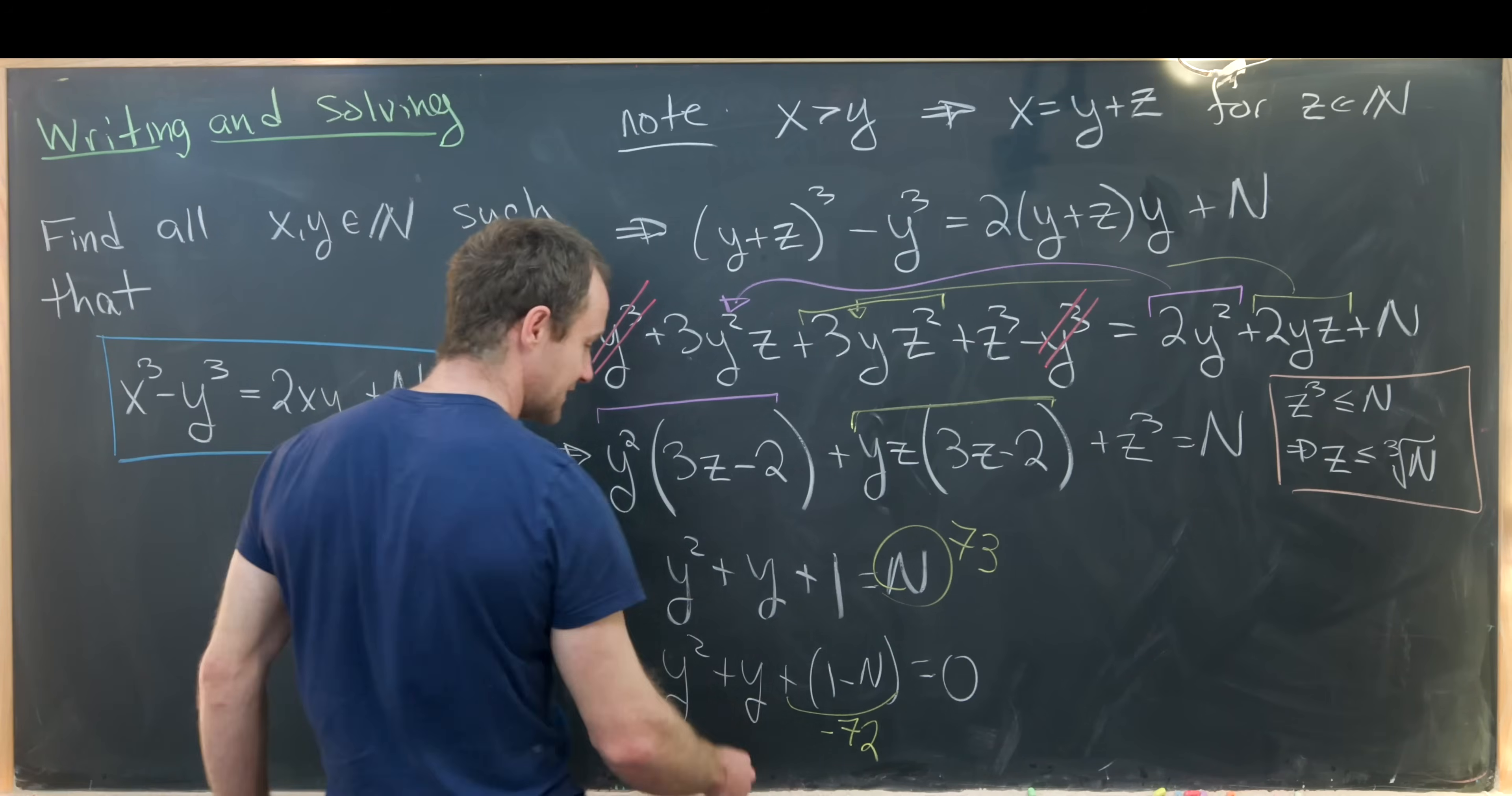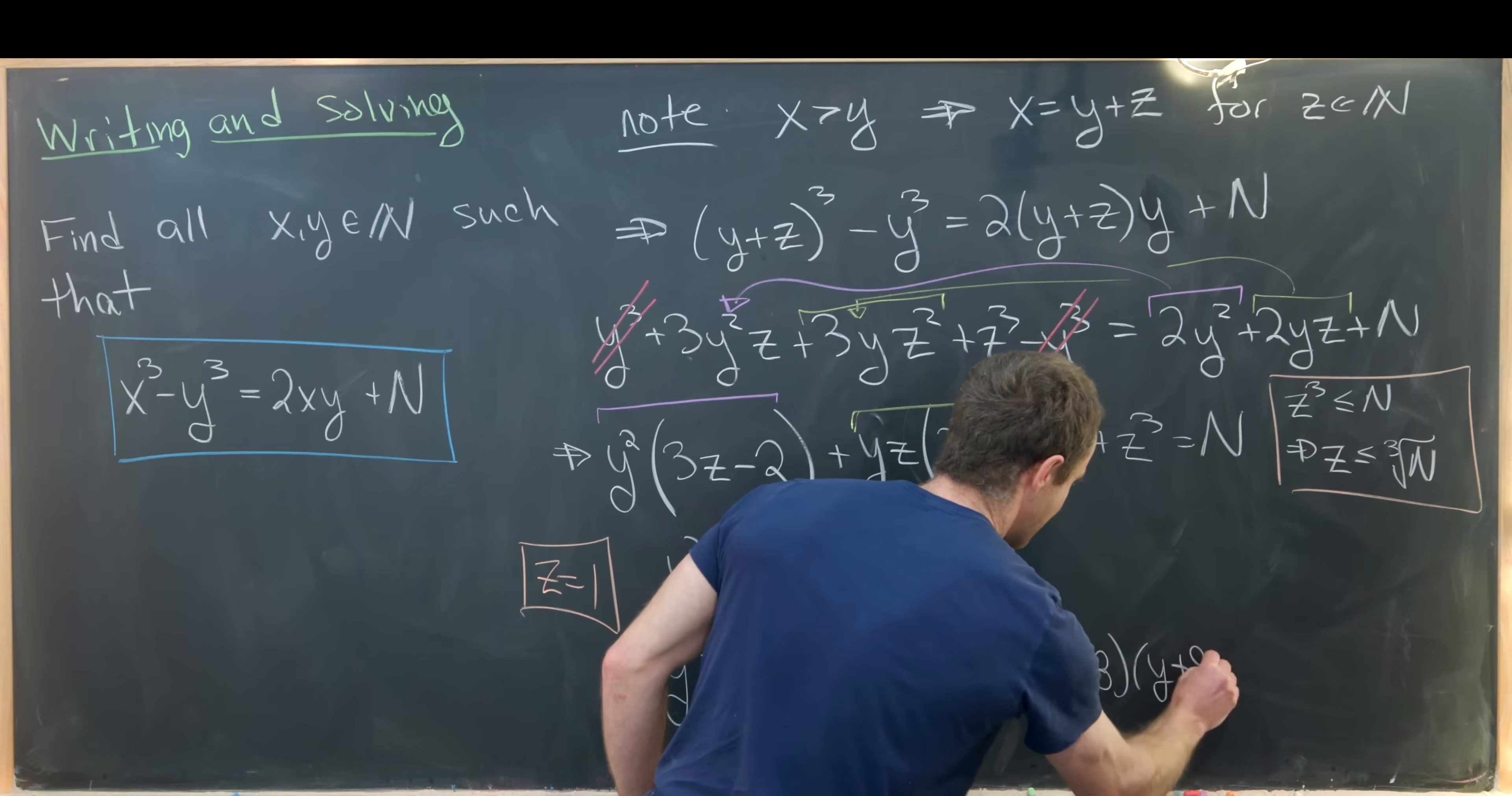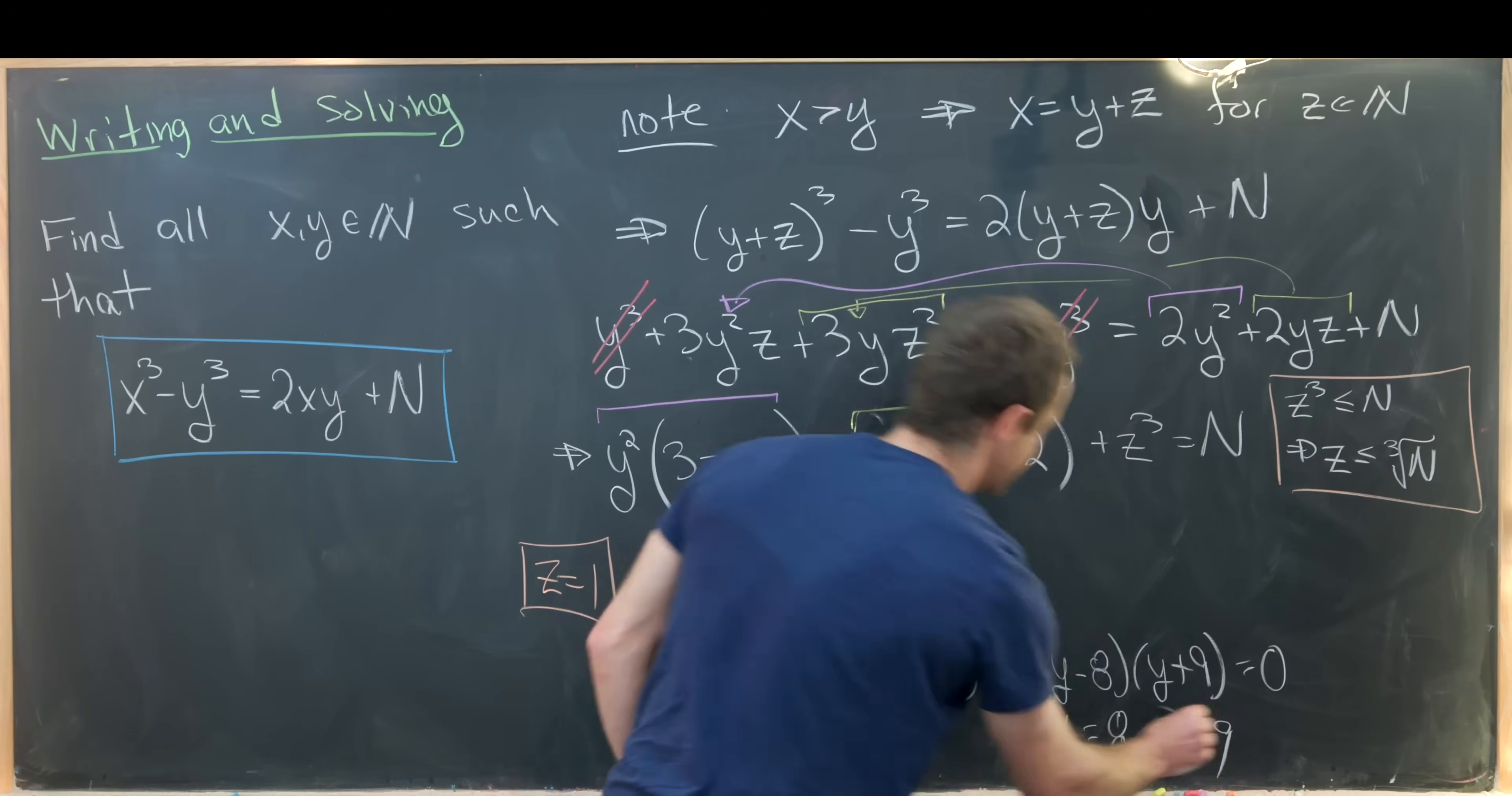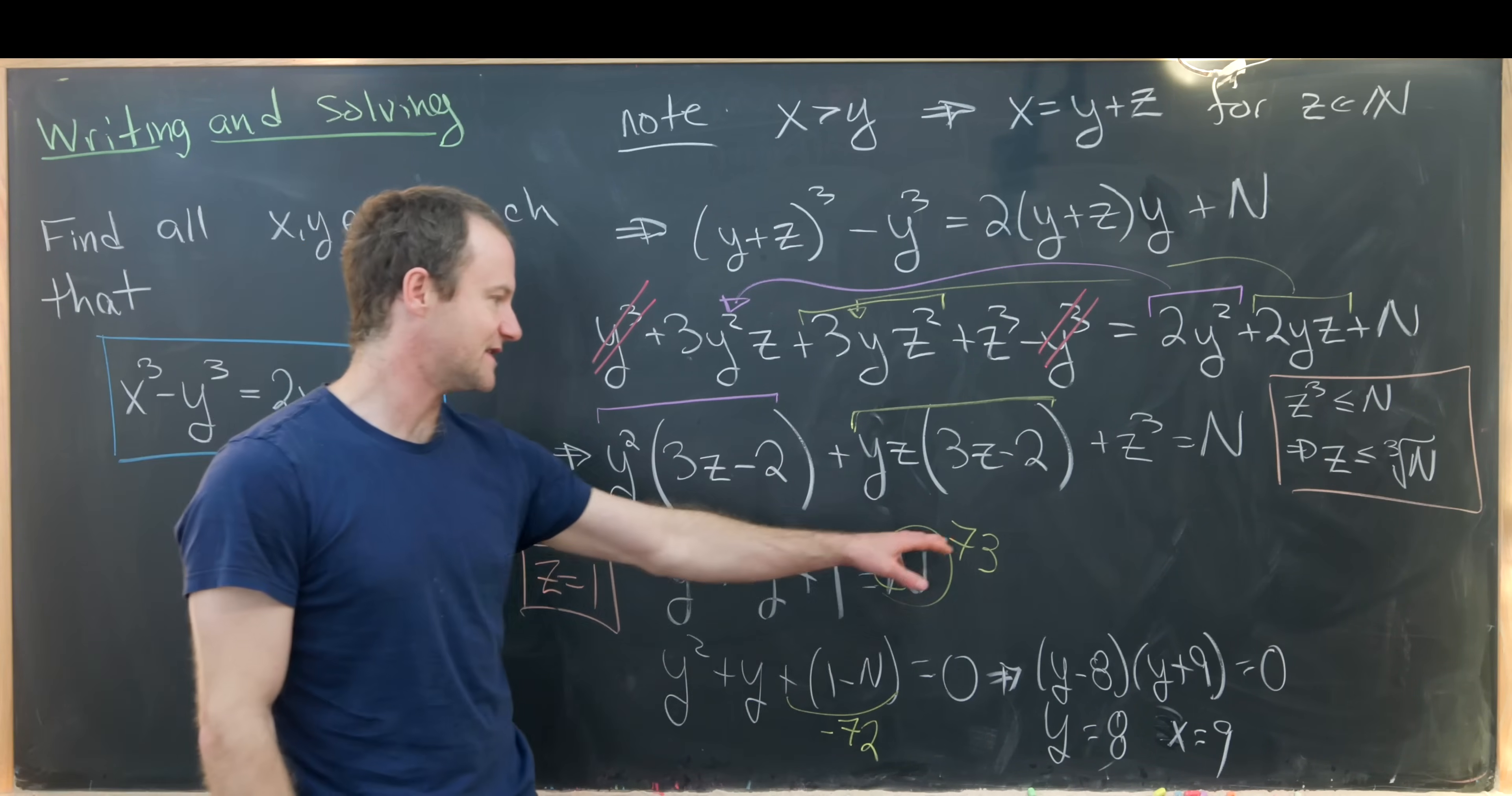Notice if we get negative 72 here, that means this guy factors as (y - 8)(y + 9) = 0, and in turn we see that y is equal to 8 and thus x is equal to 9, given that z is 1 and x is y + z.